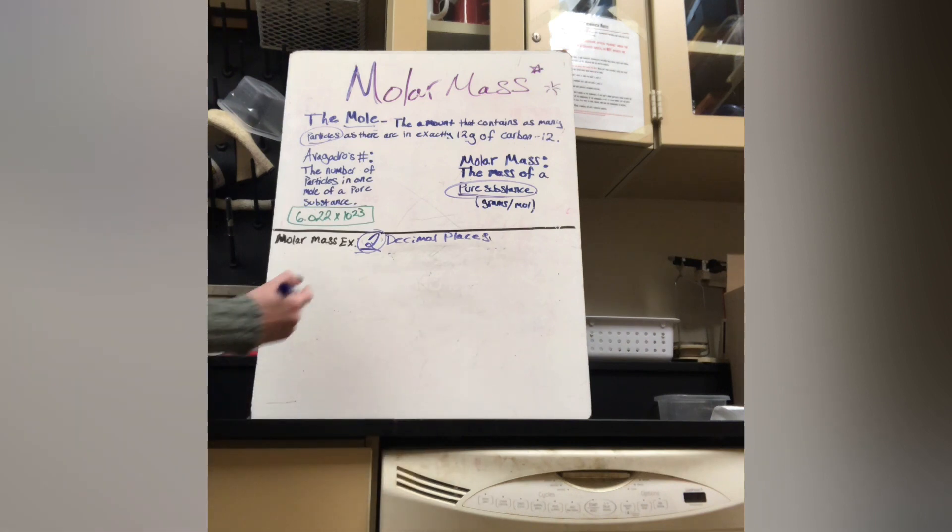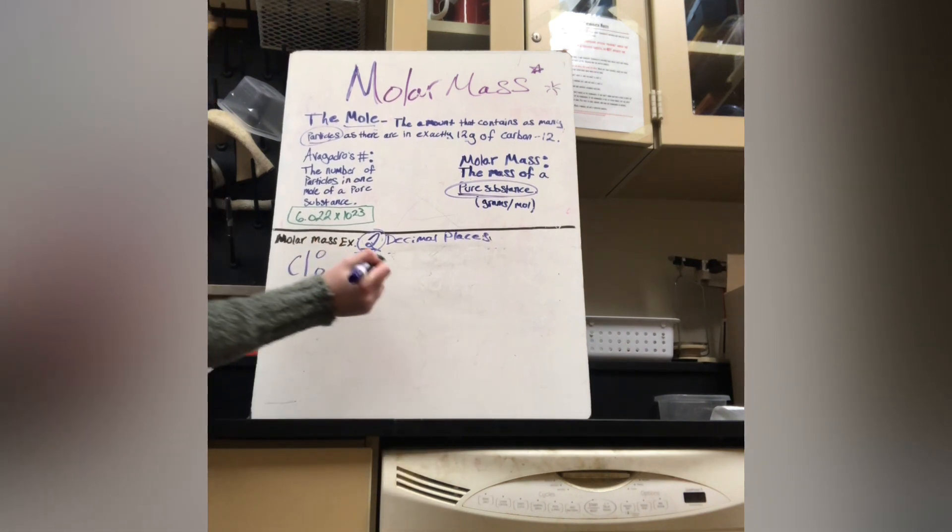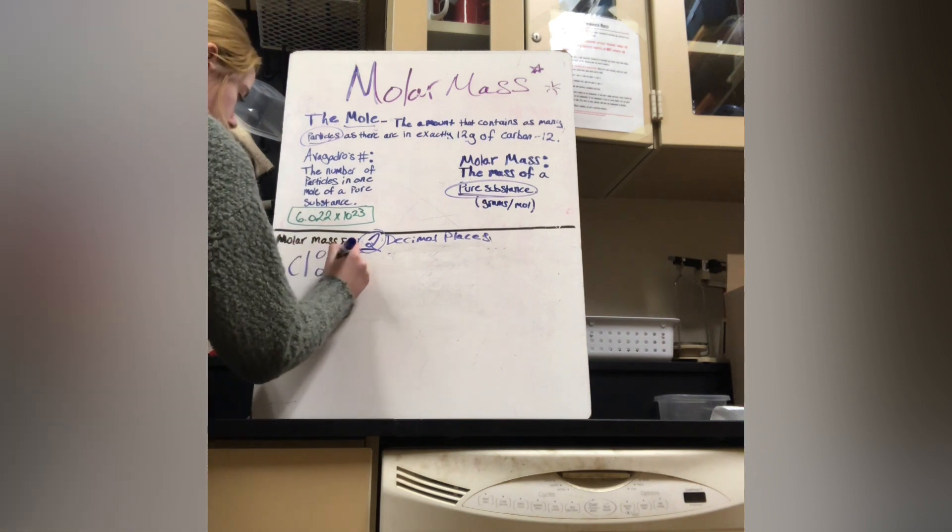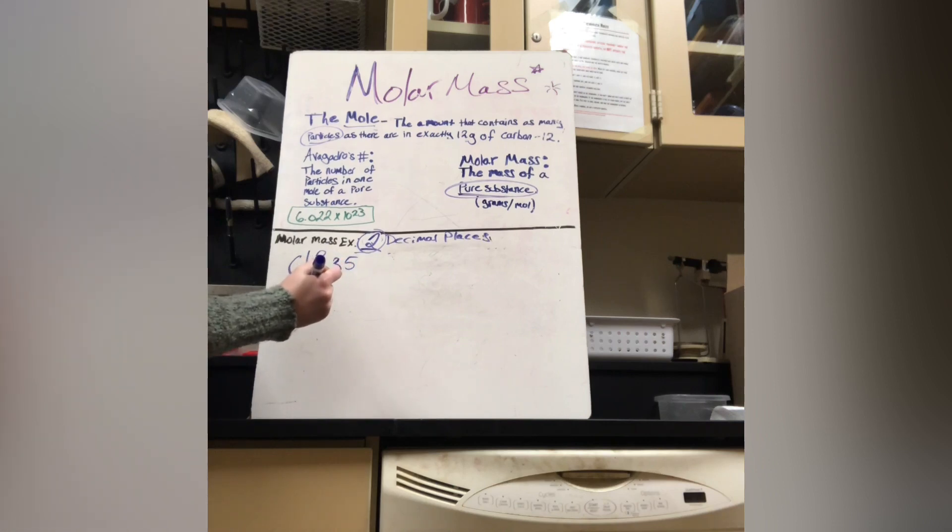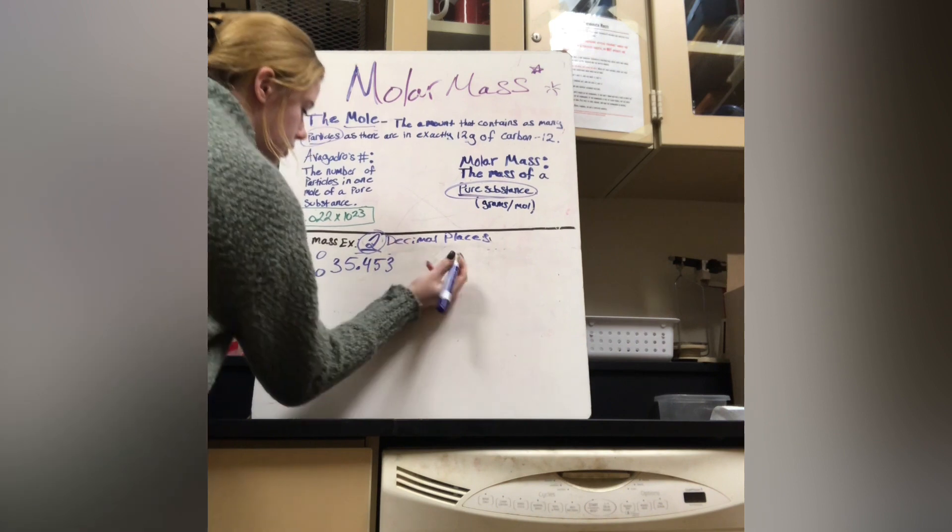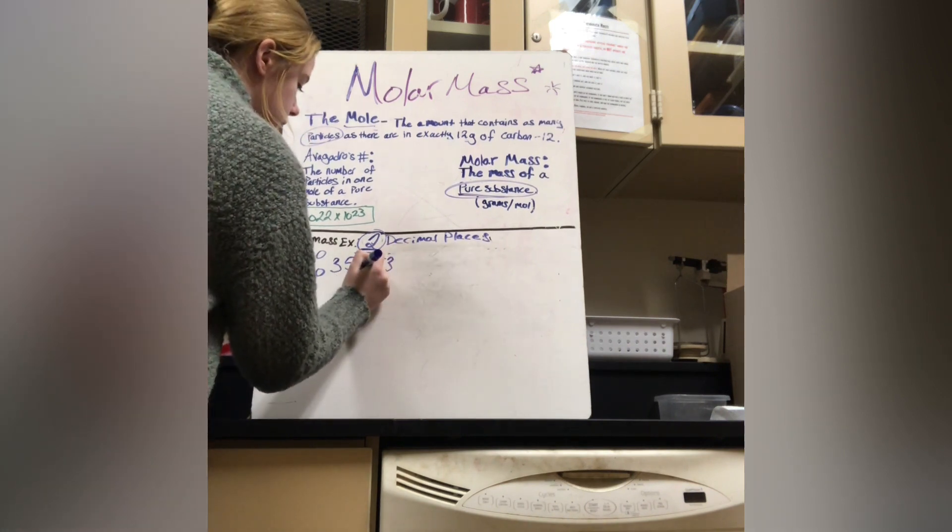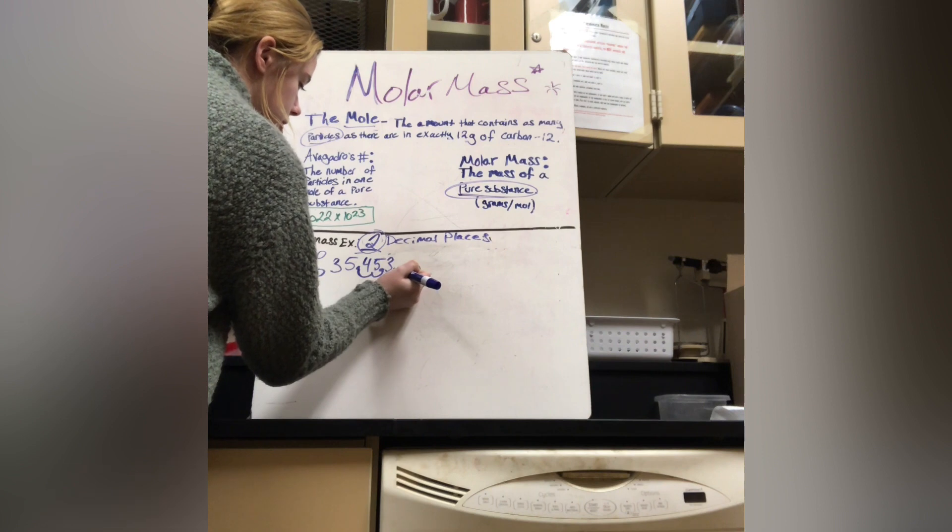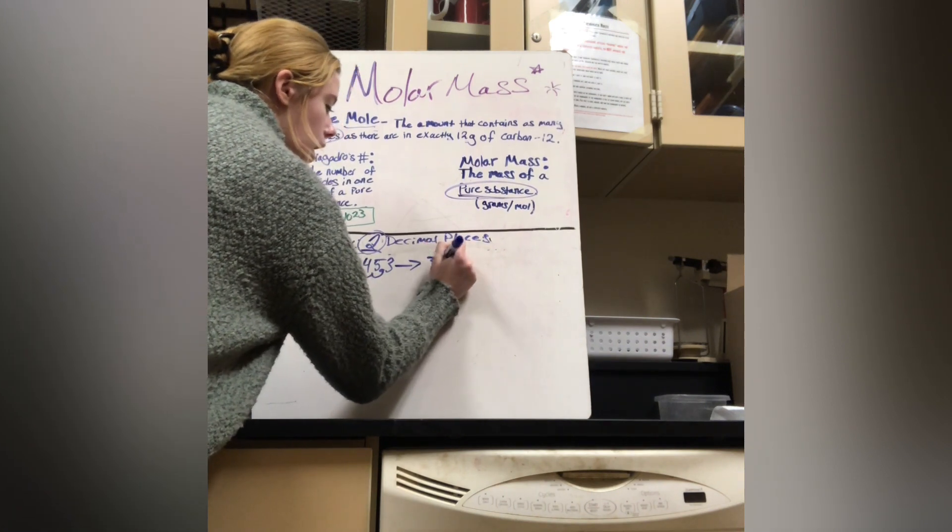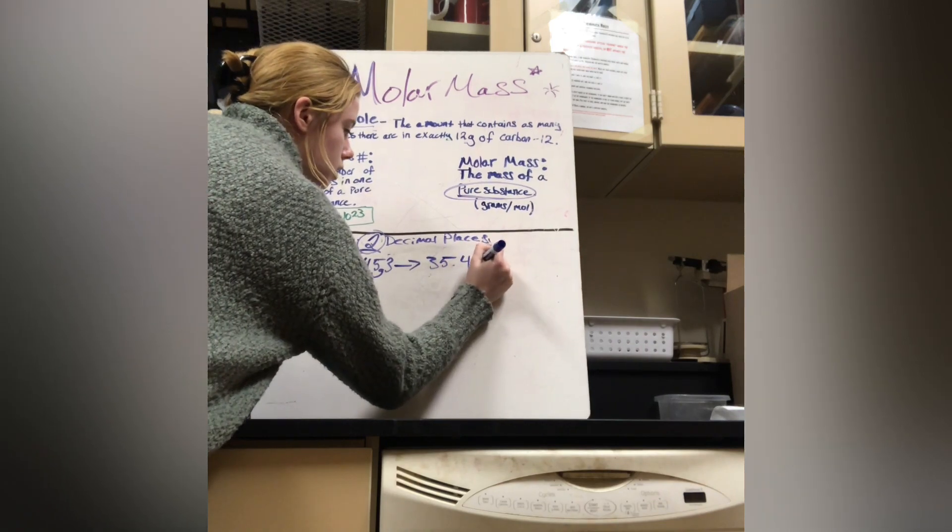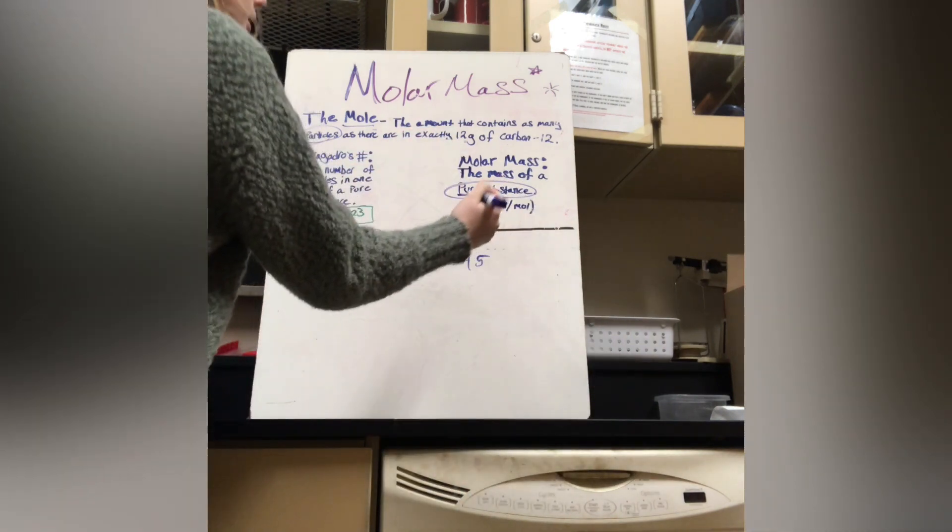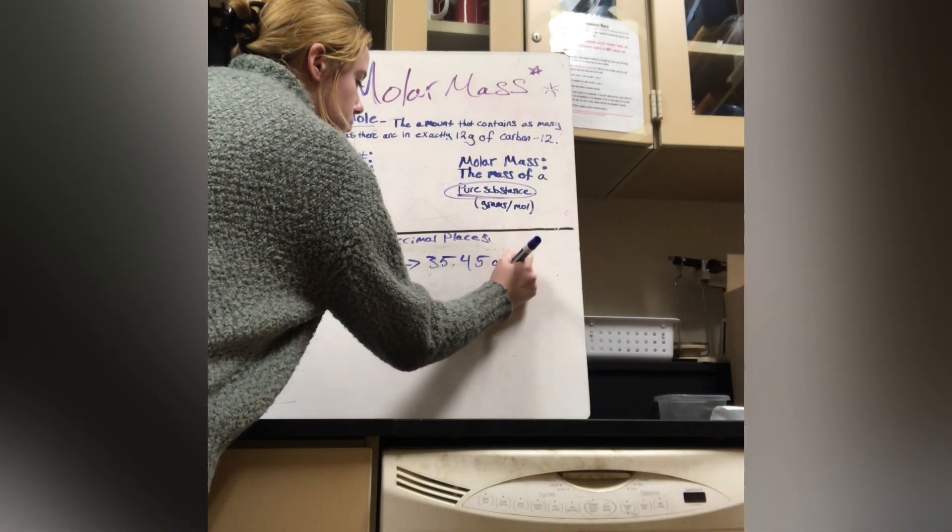So for example, if we would do chlorine, chlorine would be 35.453. And we would carry the decimal two places. So it would be 35.45. And since it's molar mass, we have to use our units. So it would be grams per mole.